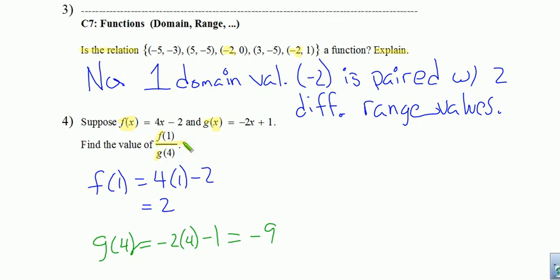Now I just need to finish the problem. They wanted us to find f of one divided by g of four. Well, I have f of one is two. And I have g of four is negative nine. So I've got two divided by negative nine, which is the same as negative two ninths. Final answer.